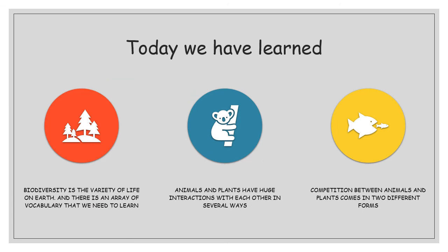So that's the lesson for today. We've learned that biodiversity is the variety of life, and there's a huge amount of vocabulary to go with that — flashcards are a great way to get your head around it. We talked about interactions of organisms through food webs and food chains, predator-prey relationships, and competition. There are two types of competition: interspecific, between two different species, and intraspecific, between organisms of the same species. Intraspecific competition is more intense than interspecific.